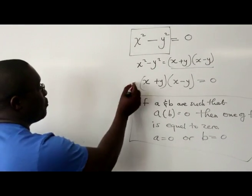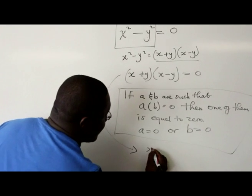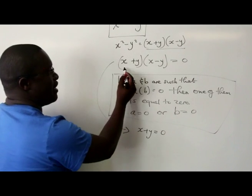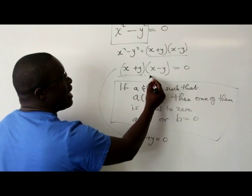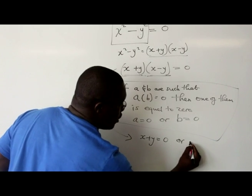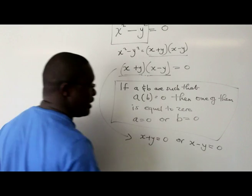So in our case now, we're going to say x + y = 0, because this is one of the factors, or x - y = 0.